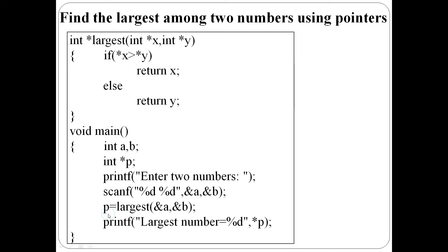The return type of this function is int star — one integer pointer. That address is returned to the main function and assigned to p. p is an integer pointer. p now points to the largest number. Then star p is displayed — the largest number is displayed.